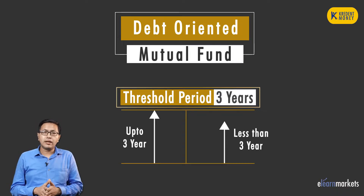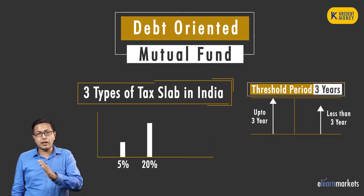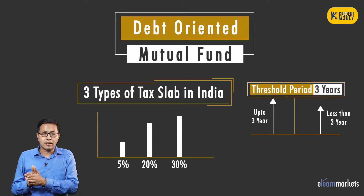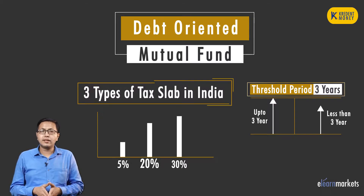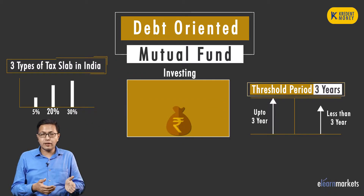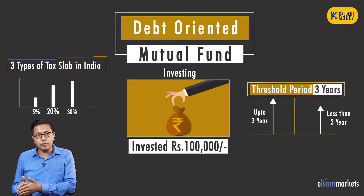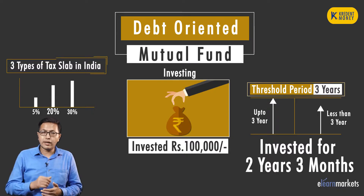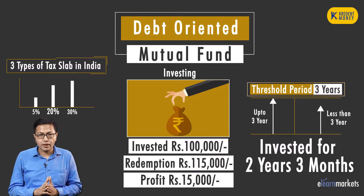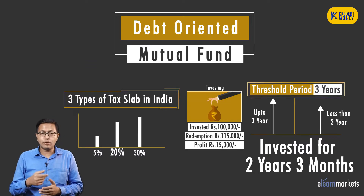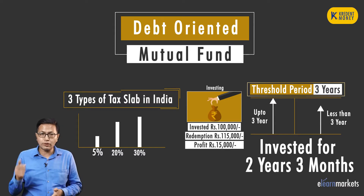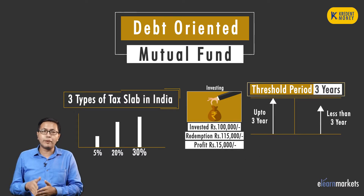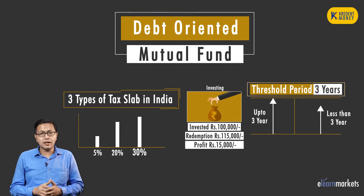So what does that mean? In India we have three tax slabs: 5%, 20%, and 30%. In whichever tax bracket you fall into, you are going to pay tax accordingly. Continuing the previous example — if you have invested Rs 1 lakh and you take out your money after two years and three months with a capital gain of Rs 15,000, and you fall into the 20% tax bracket, you will pay 20% on Rs 15,000. If you fall into 5%, you will pay 5% on that amount, or if you fall into 30%, you will pay 30% on that amount. These are the income tax department rules regarding debt market mutual funds.